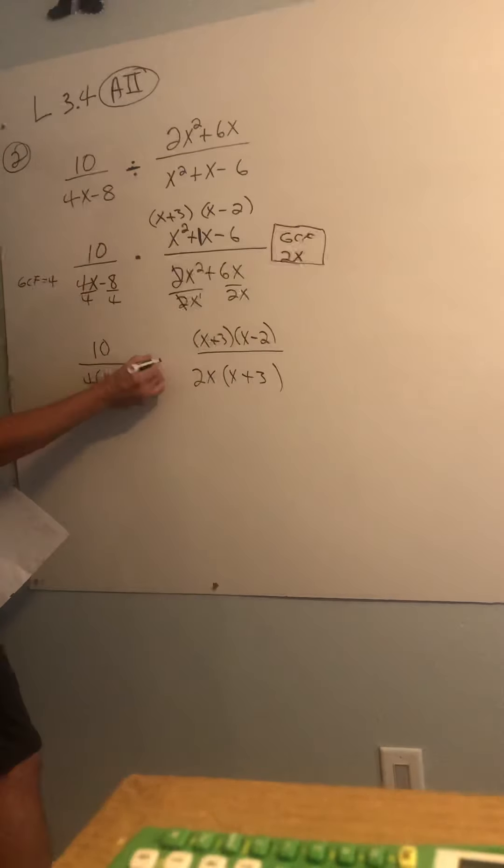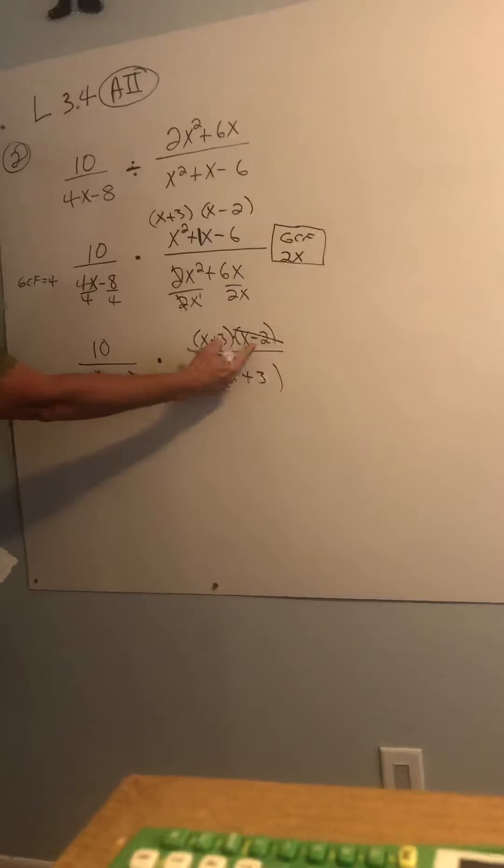Now, the party finally begins. I can't say it enough. You cannot cancel factors unless you have them separated by multiplication. So see all this multiplication here and then the only way you can cancel is if the factors are exactly the same, but 1 is in the numerator, 1 is in the denominator. So, where does this party begin? Look, x minus 2 and x minus 2. 1 was below, 1 was above. And they don't have to be directly on top of each other. x plus 3 is in the numerator, x plus 3 is in the denominator. 2 and 10. 2 can go into 2 once, can go into 10 five times.